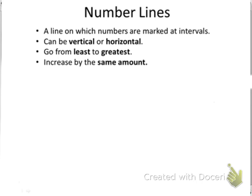Number lines are lines on which numbers are marked at intervals. Intervals — that might be a new word for you. Interval just means at a consistent amount, or the same amount. So, intervals means the same amount.